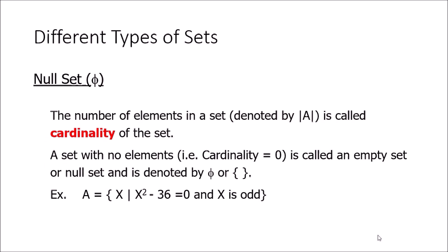Next is the null set — the set that contains nothing — denoted by the symbol ∅ (zero with a strike). The cardinality of a set is the number of elements it contains, so a null set has cardinality zero. For example, consider A = {x | x² − 36 = 0 and x is odd}. From x² − 36 = 0 we get x = ±6, but ±6 are not odd, so no element satisfies both conditions. Therefore A is a null set, represented as ∅ or {}.